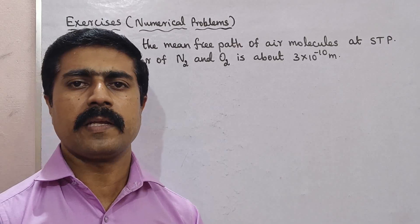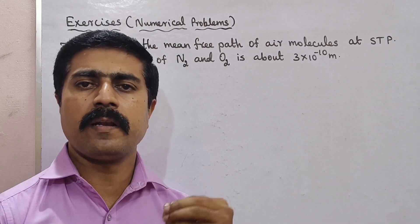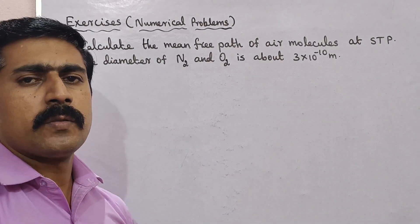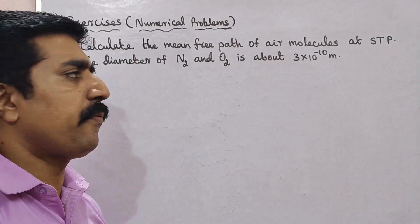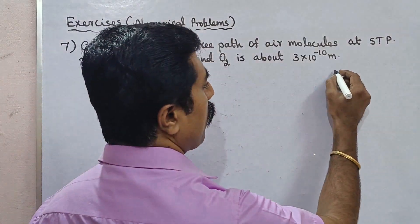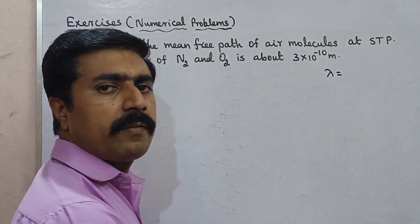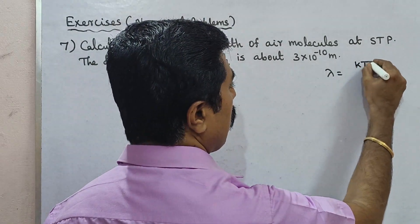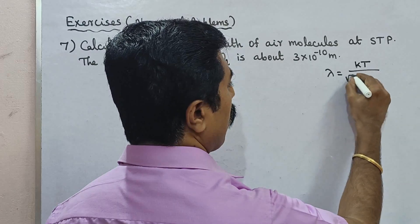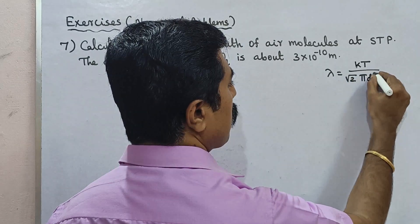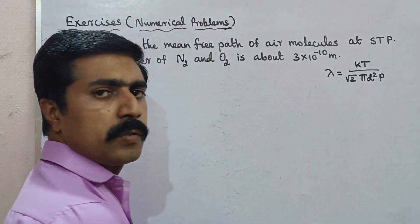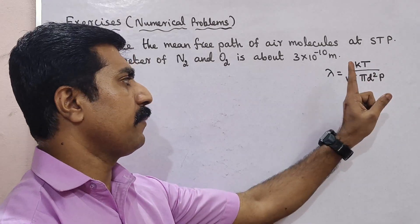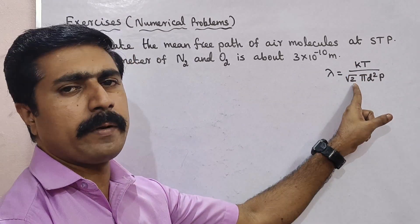So for the mean free path formula, we have to look at the derivation. It is very important to know the mean free path of the topic. It is denoted by the letter lambda. The final formula we derived is: lambda is equal to KT divided by root 2 pi D squared P.